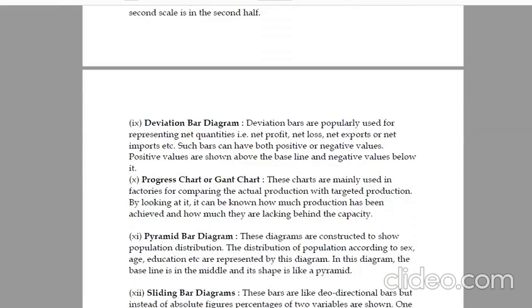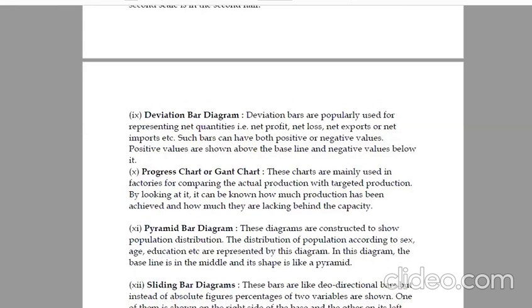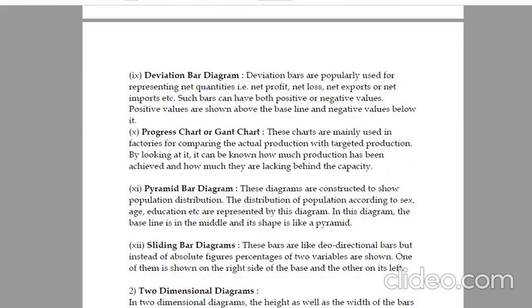Paired bars. If two different information which are in different units are to be presented, then paired bar diagrams are used. These bars are not vertical but horizontal. The first scale is in the first half and the second scale is in the second half. Deviation bar diagrams. Deviation bars are popularly used for representing net quantities and net profit, net loss, net exports etc. Such bars can have both positive or negative values. Positive values are shown above the baseline and negative values below the baseline.